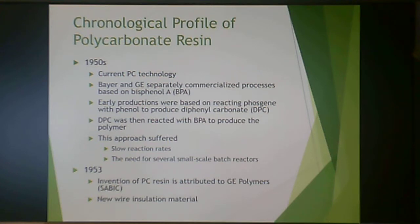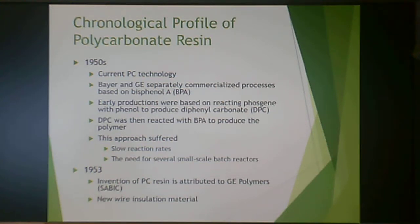Bisphenol A was reacted with phosgene to produce diphenyl carbonate, which was then reacted with bisphenol A to produce polymer. This approach produced slow reaction rates and the need for several small-scale batch reactors. In modern polymer production we try to do continuous reaction, as opposed to batch reaction, so this was not ideal.